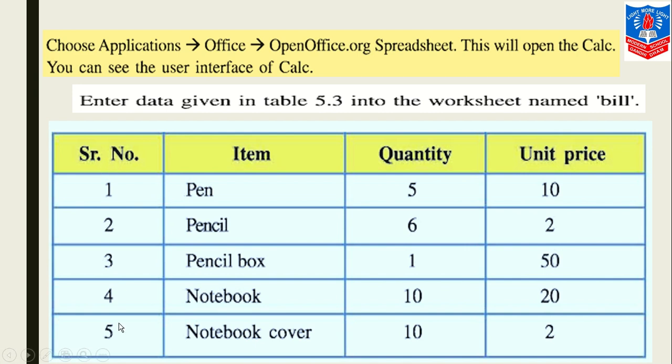See, this is the data: serial number 1 to 5. There are different items: pen, pencil, pencil box, notebook, notebook cover. Quantities are also given, and unit price as per one. We have to create this.